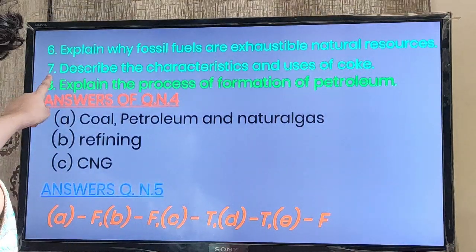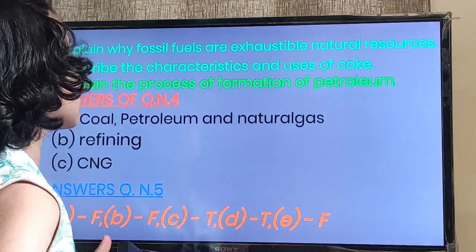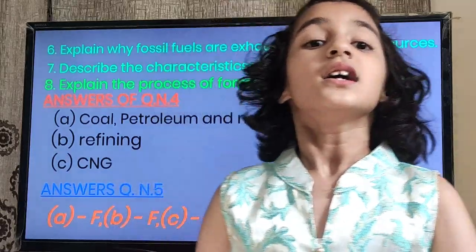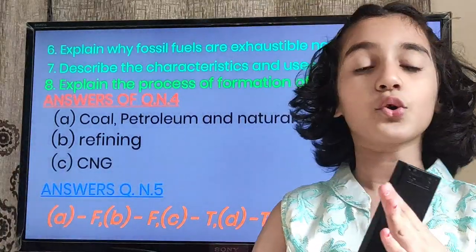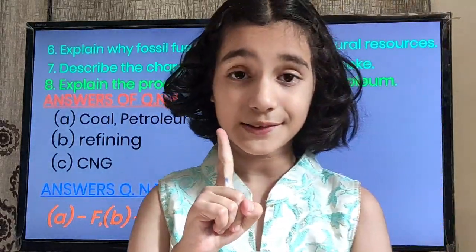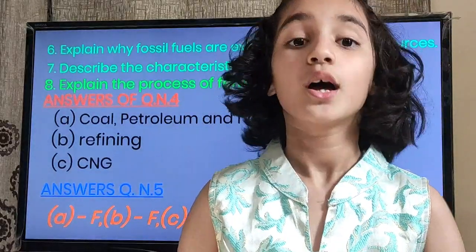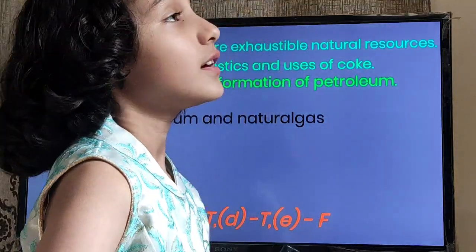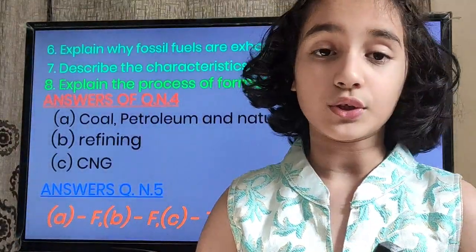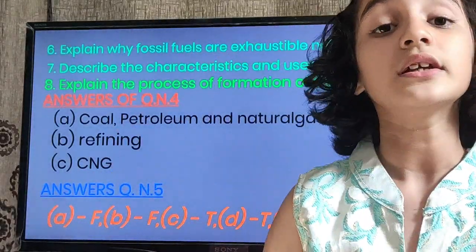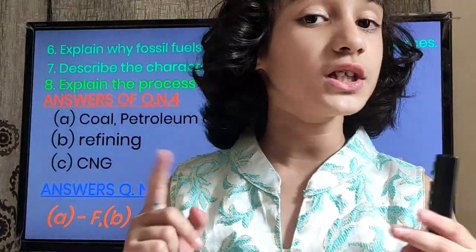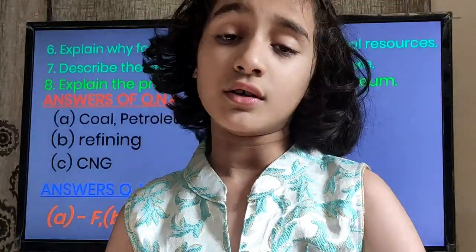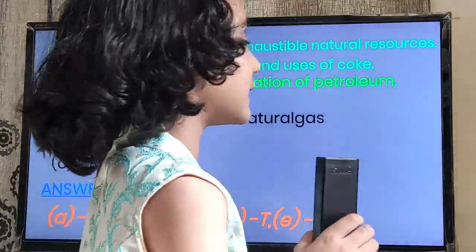Now we are going to do question number 7: Describe the characteristics and uses of coke. Characteristics: Number 1, coke is tough. Number 2, coke is porous. Number 3, coke is black in color. Uses: Number 1, in the manufacturing of steel. Number 2, in the extraction of metals as a reducing agent.